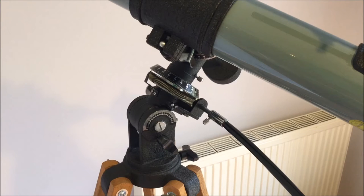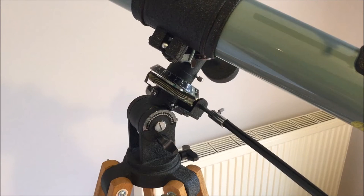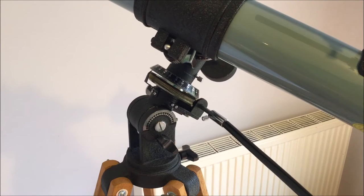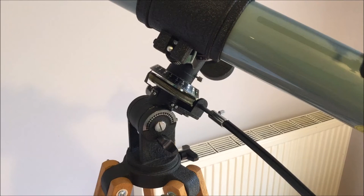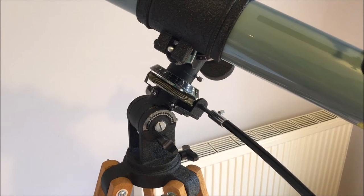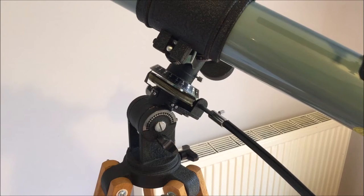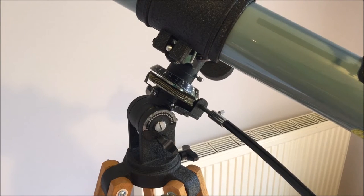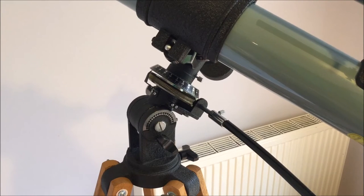These days we probably refer to the equatorial mount as an EQ1. So it's a pretty basic lightweight unit, but it's still quite nicely made. It came with slow motions which operate smoothly on the right ascension and the declination, although there was a limit to the amount of travel on the declination before you had to unclamp and move the scope manually.